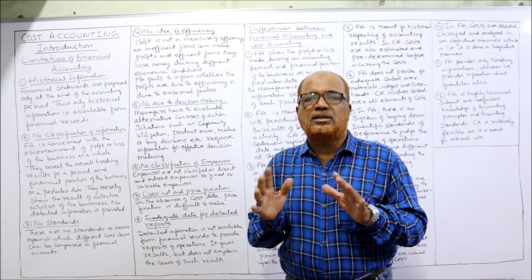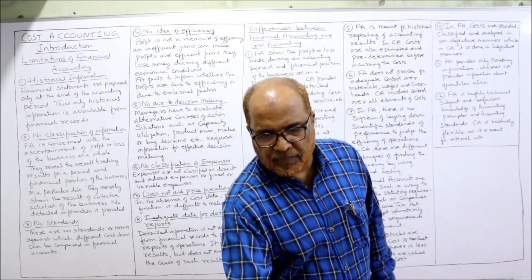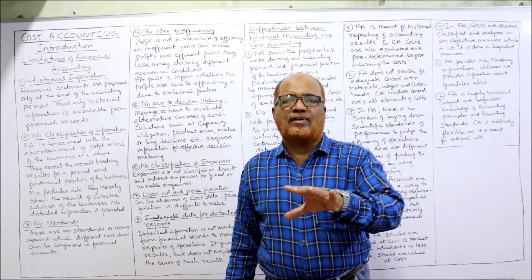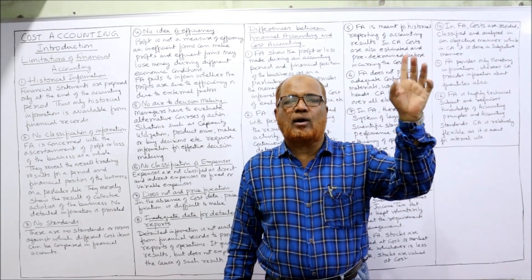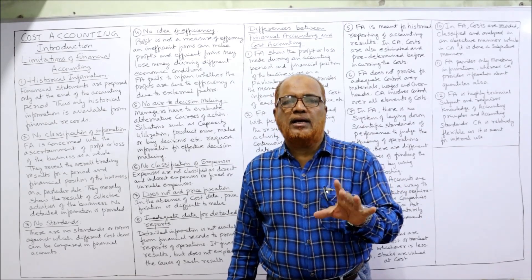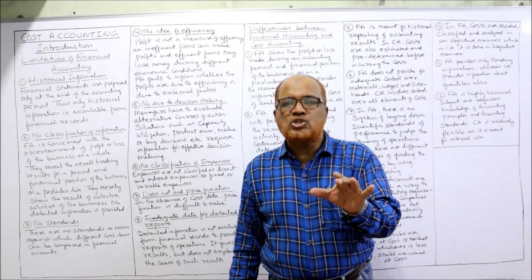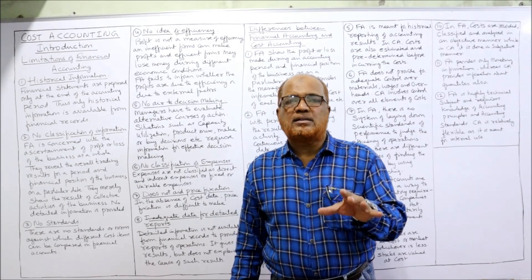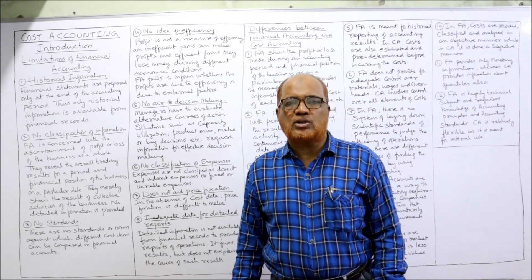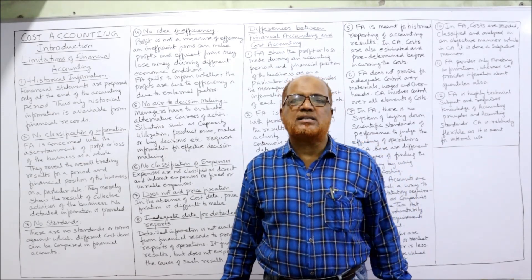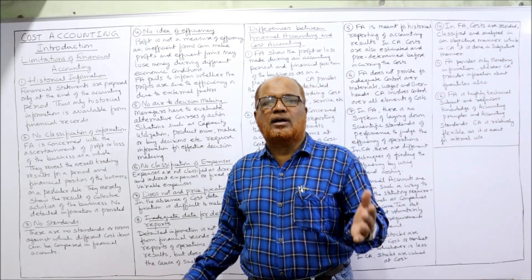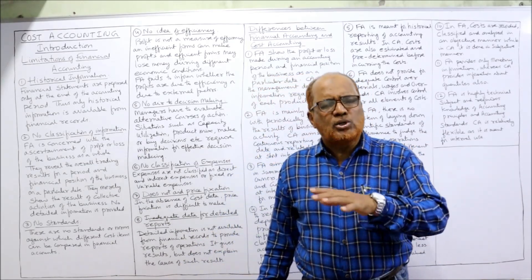First, I'm going to explain what are the limitations of financial accounting. The oldest form of accounting is financial accounting and it is still widely applied throughout the world to prepare financial statements. But these financial statements have their own drawbacks and limitations, due to which other forms of accounting have started — like cost accounting, management accounting, inflation accounting, responsibility accounting, and many more.